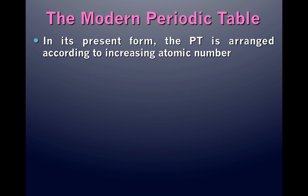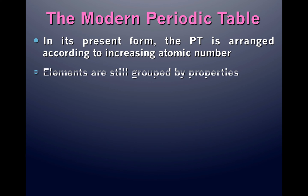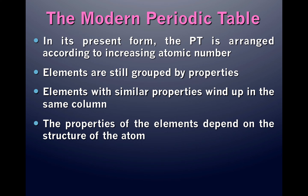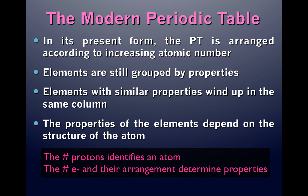While Mendeleev arranged his periodic table according to atomic mass, the modern periodic table is arranged according to increasing atomic number. The elements are still grouped by properties. Elements with similar properties wind up in the same column. The properties of elements depend on the structure of the atom — while the number of protons identifies the particular element, the electronic structure determines the chemical properties.